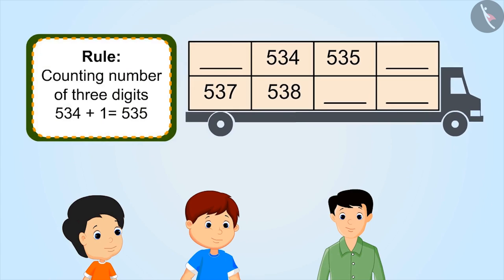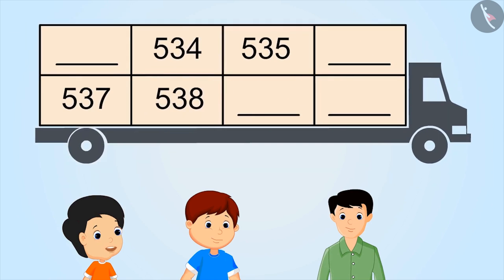This is a three-digit number. 534, 535. So, the next one is 536. Right, but you have not filled the first one yet.